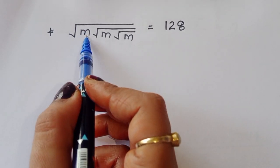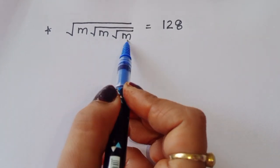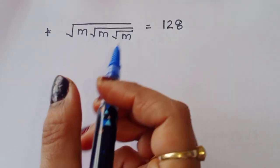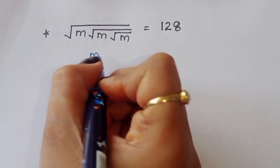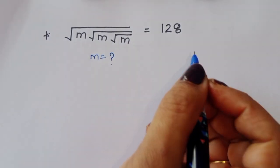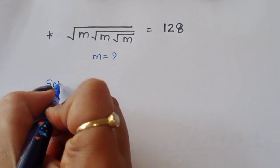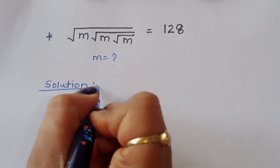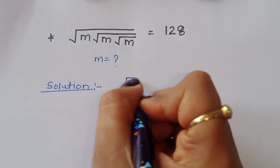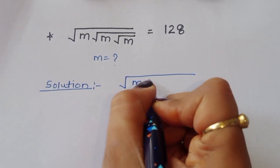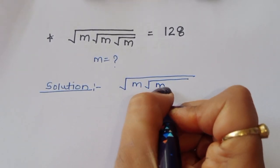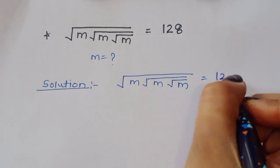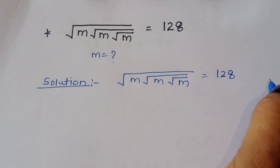The question is: given the square root of m times the square root of m times the square root of m is equal to 128. We have to find out the value of m. So m is equal to what? Let's see the solution. Square root of m under square root of m under square root of m is equal to 128 — this is the given question.